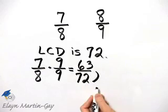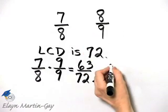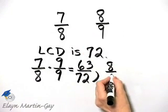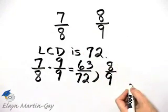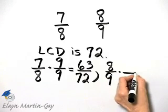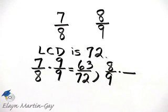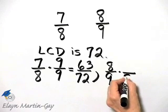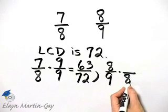Now let's do the same thing, but we're going to do it now with 8 over 9, my other fraction. What do I multiply the denominator 9 by in order to have a product of 72? Well, if I multiply 9 times 8, then I have a product of 72.